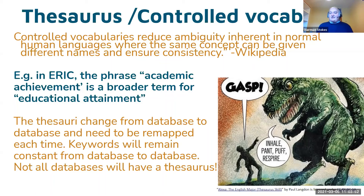Most databases will have a thesaurus, but some like Web of Science do not. We're going to quickly show you what a thesaurus looks like by going to PubMed. In PubMed you'll find the MeSH database under the section called 'Explore'. We were going to search for breast cancer.